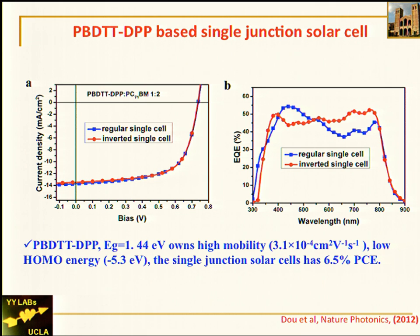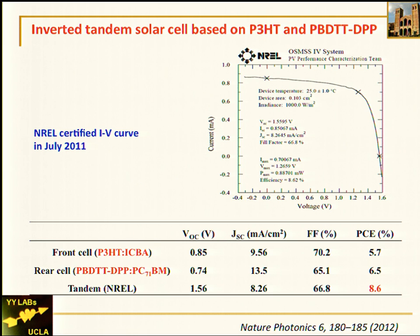This single-layer device uses ITO and aluminum electrodes. The material has a bandgap of 1.44 eV with high carrier mobility and a low HOMO energy level to give a higher Voc of about 0.75 volts. Here is the NREL certification chart — we submitted our paper to Science, and the editor asked us to have NREL certify it. NREL takes about three months but does wonderful work. We were certified at 8.6% efficiency, which at that time was the highest in the world.